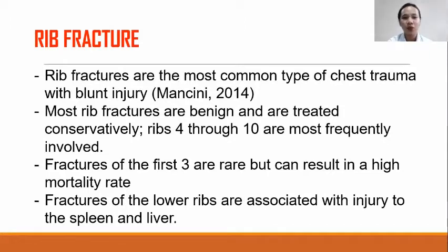Fractures of the lower ribs are associated with injury to the spleen and liver, which may be lacerated by fragmented sections of the ribs.